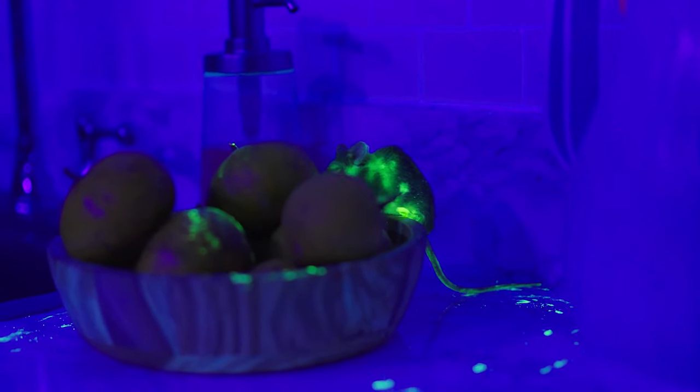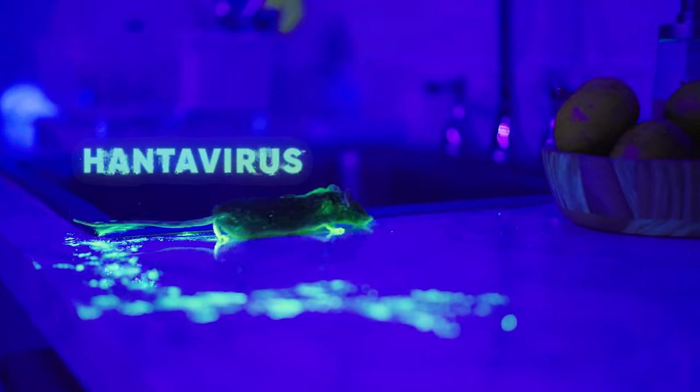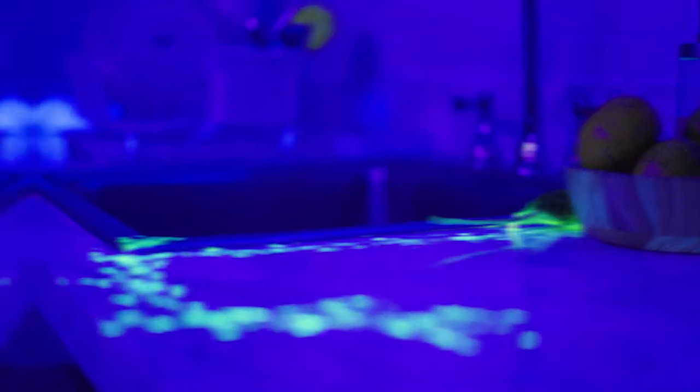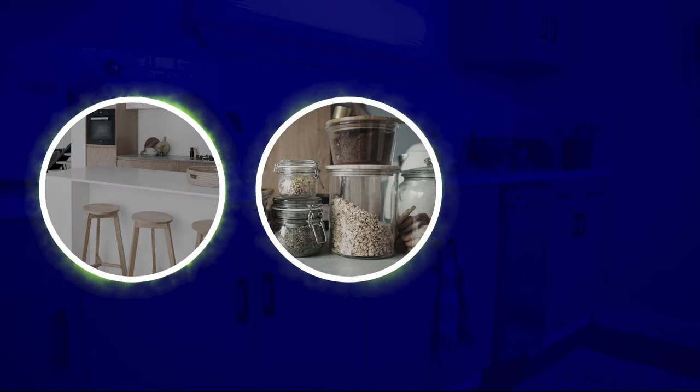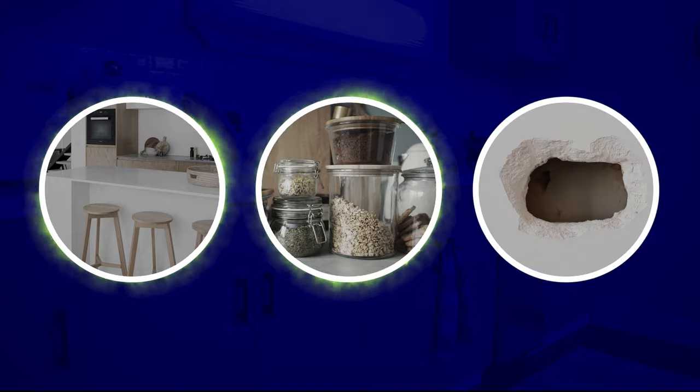Mice can transmit bacteria and diseases like hantavirus and salmonella, as well as pose serious fire hazards from gnawing on electrical wiring. Clear counters of crumbs and keep pantry food stored in airtight containers and seal up gaps and holes to prevent an infestation.